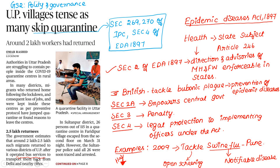As you can see, IPC Section 269 and 270 apply here. If someone is negligent or violates the law against a communicable disease, they will be in jail for 6 months. Under Section 270, the penalty can extend significantly.